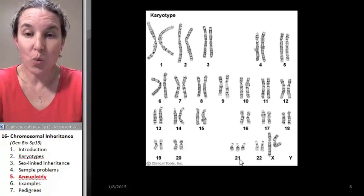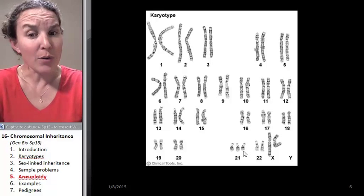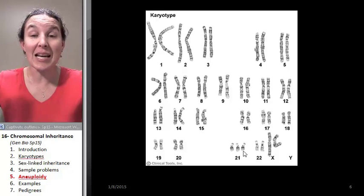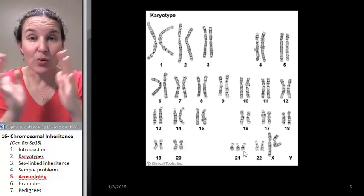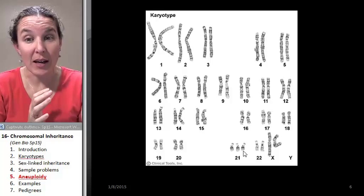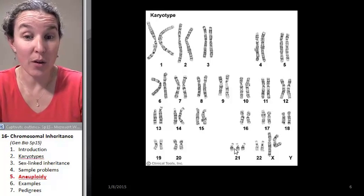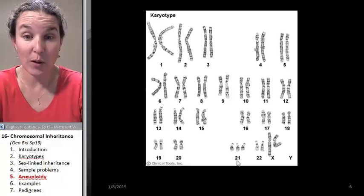Chromosome number 21, we actually have three of them. So clearly, at some stage in anaphase, two chromosomes were not separated, and we ended up with three of chromosome 21.